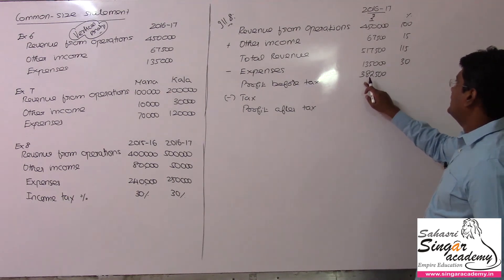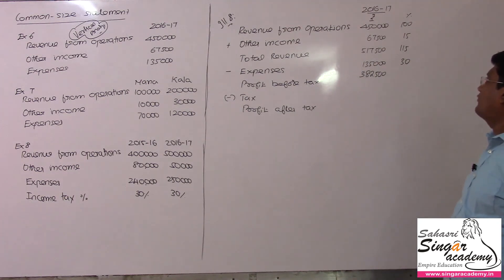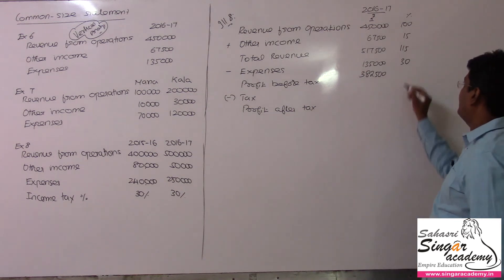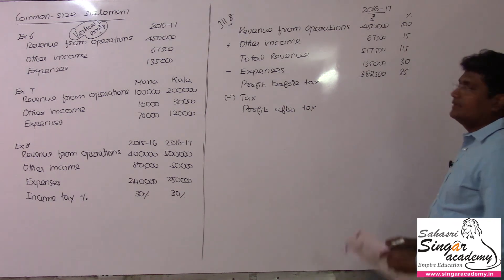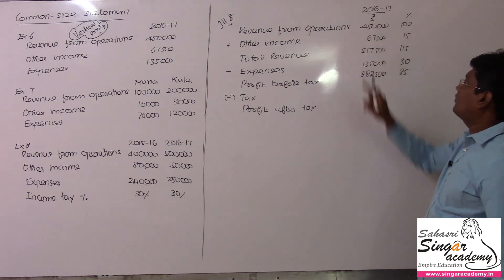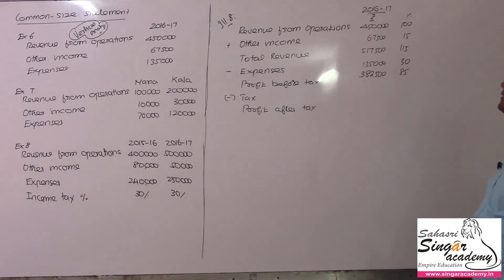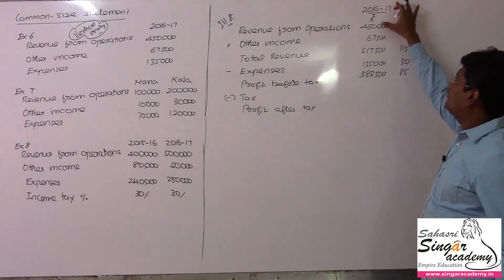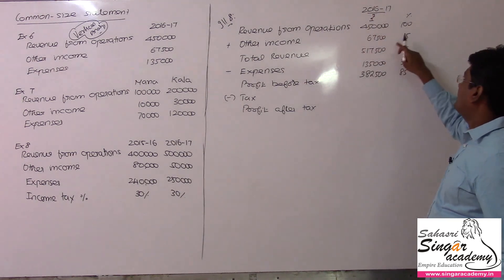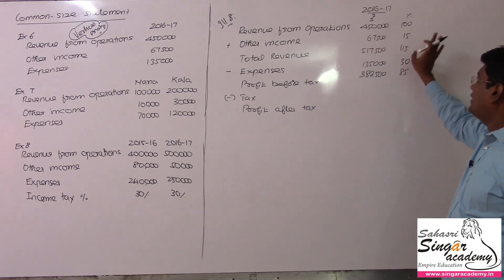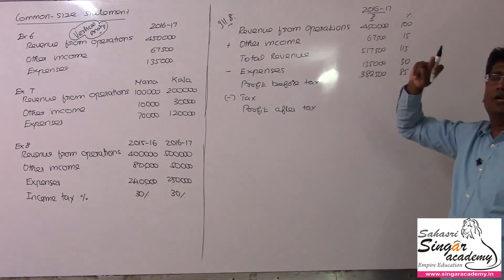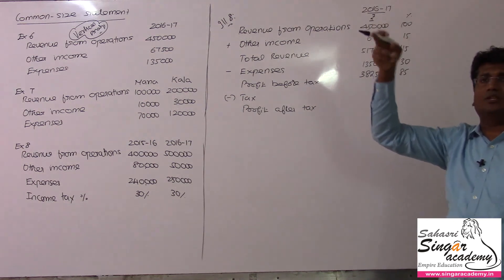Profit before tax is 3 lakhs 82,500 divided by 4 lakhs 50,000, giving 85 percent. This is how we can work it out. To make calculation easier: 10 percent of 4,50,000 is 45,000; 5 percent is 22,500; so 15 percent is 67,500. For expenses: 135 is 3 times 45, so 1,35,000 divided by 4,50,000 is 30 percent.